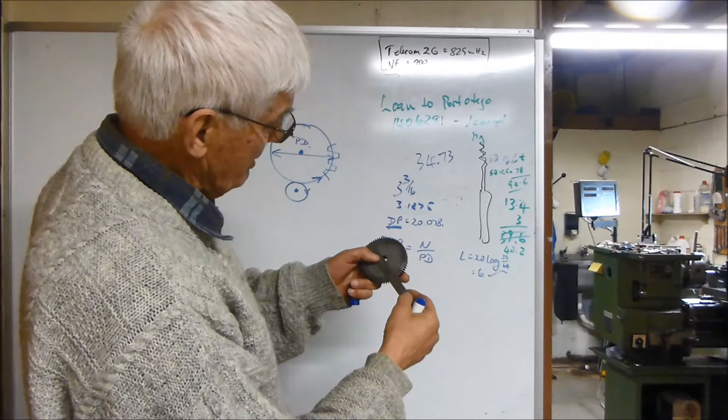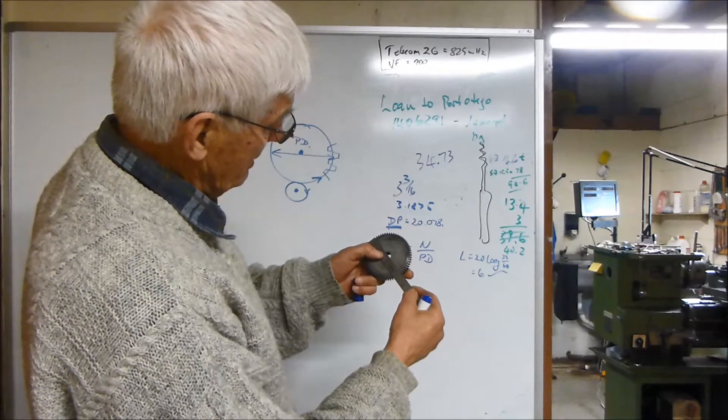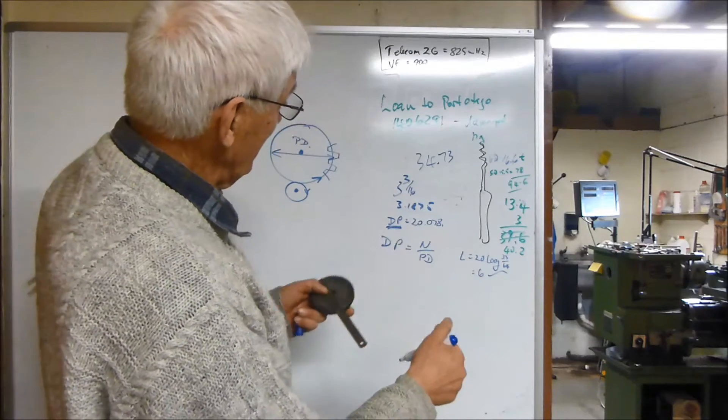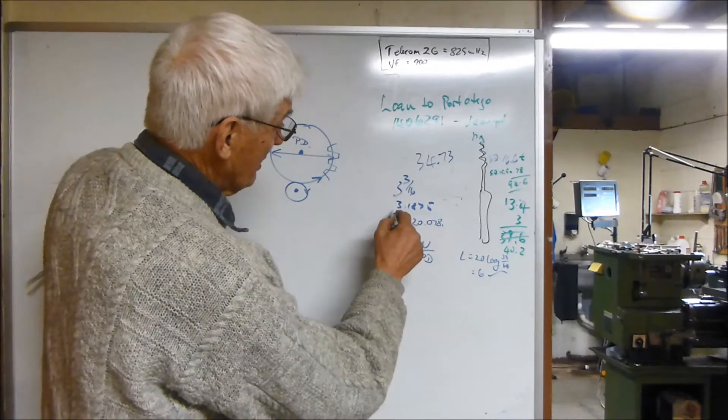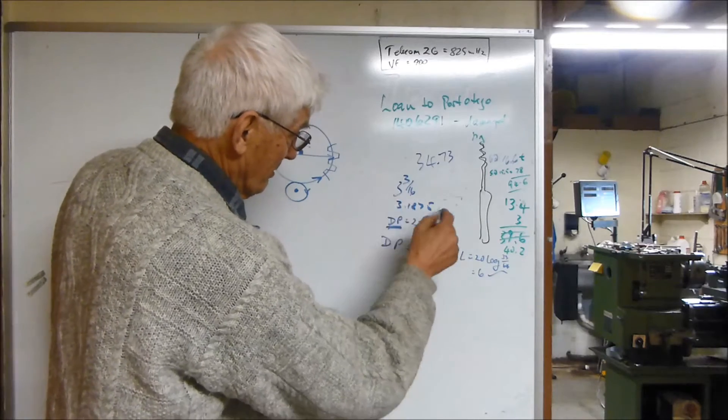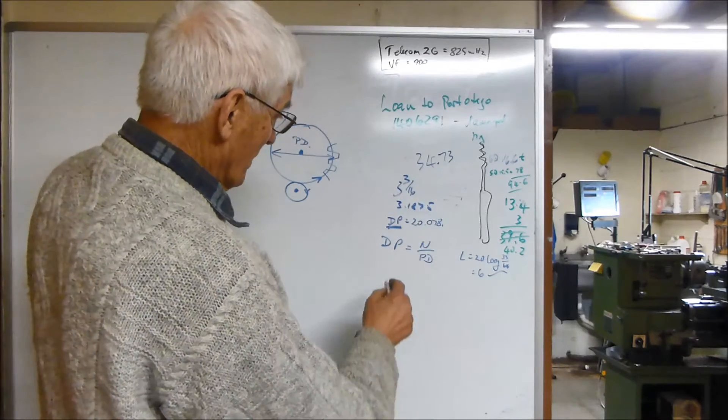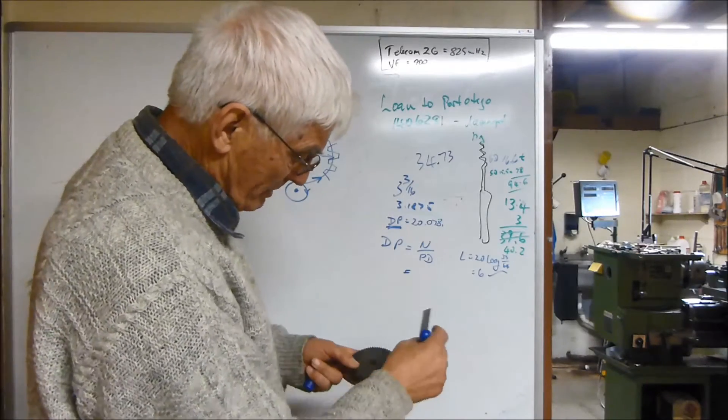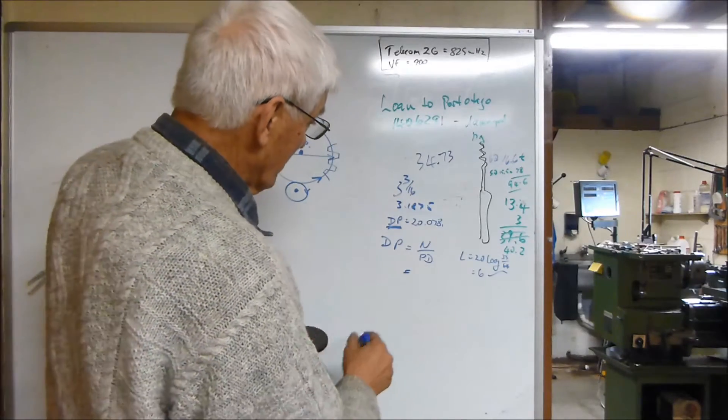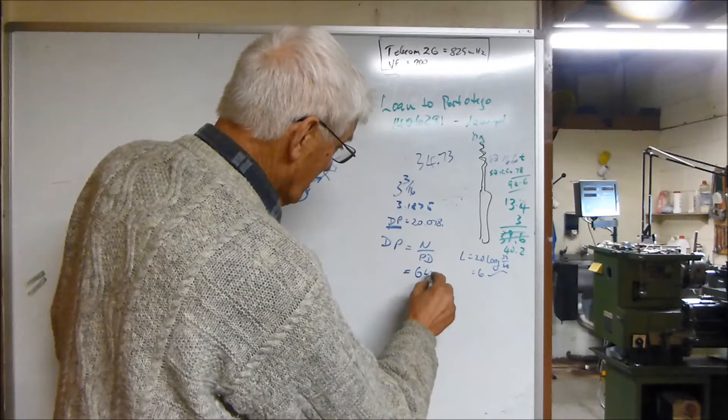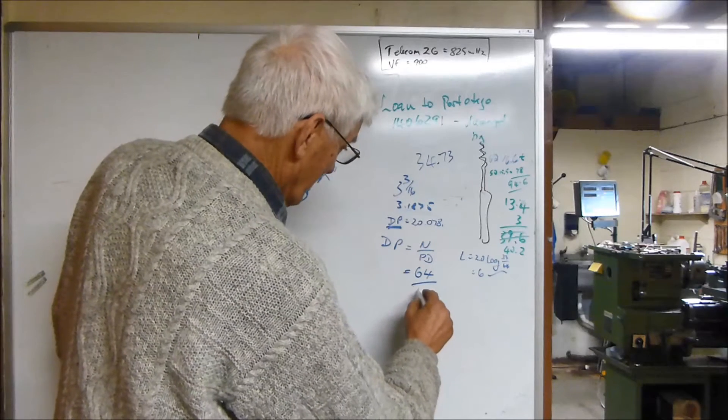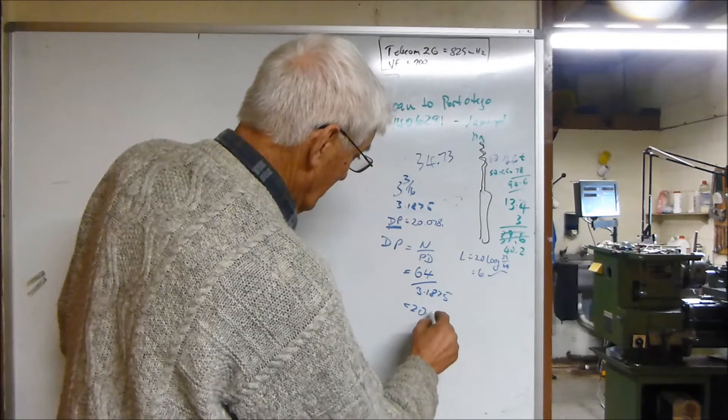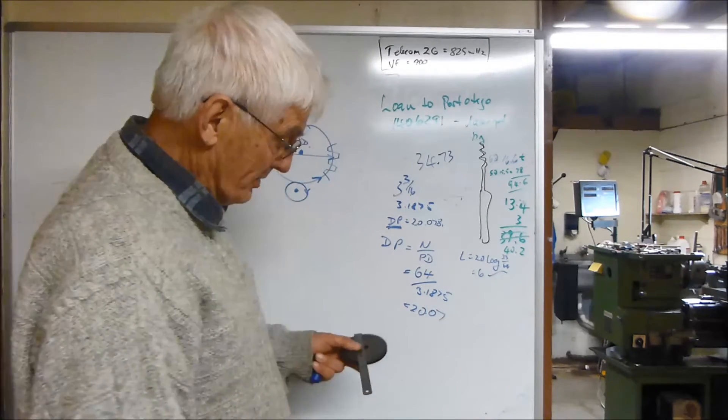When I measure this gear I'm actually measuring the diameter about halfway through the teeth. I get a pitch diameter of 3.1875. Conveniently, whoever made this gear has written it on: 64 teeth. So if I divide 64 by 3.1875, that comes to 20.07 or thereabouts.